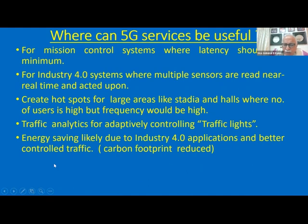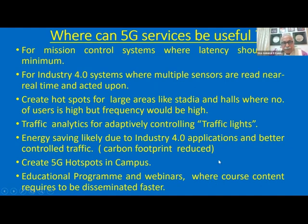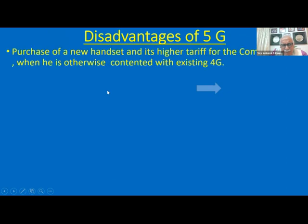Energy saving is another benefit — because of adaptive traffic control and Industry 4.0. 5G hotspots can be created on campuses for educational programs, webinars, etc., where course content needs to be disseminated faster. Because 5G is faster and downloads are faster, the quality of teaching would be improved. Now let's look at what are the disadvantages of 5G.